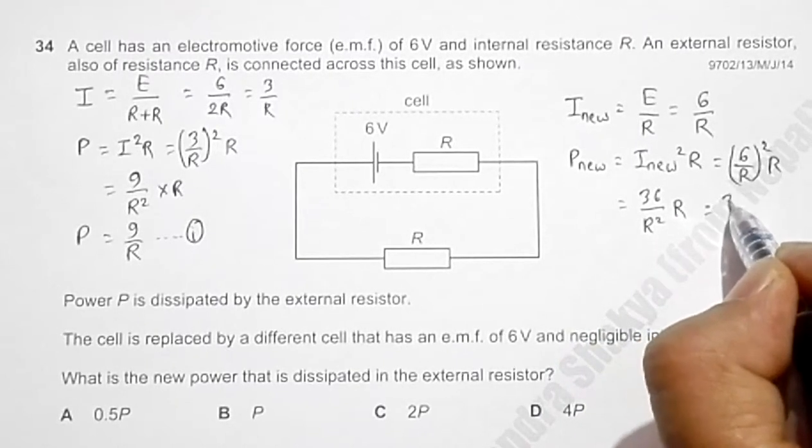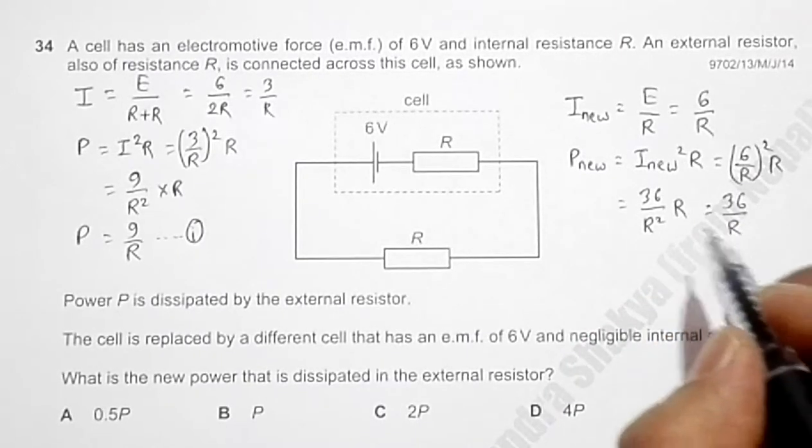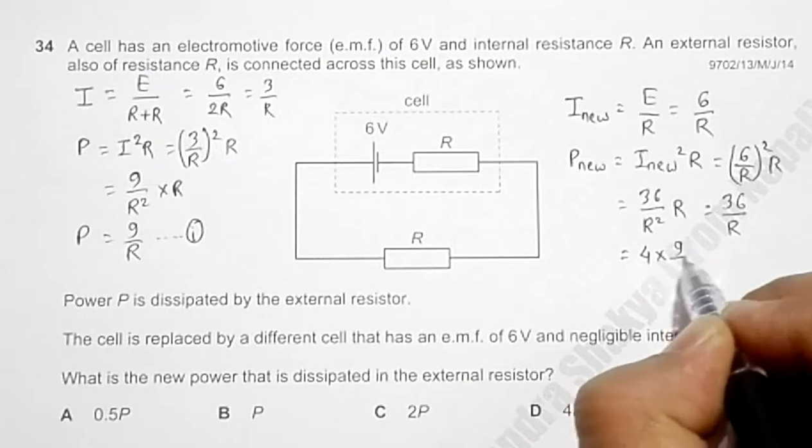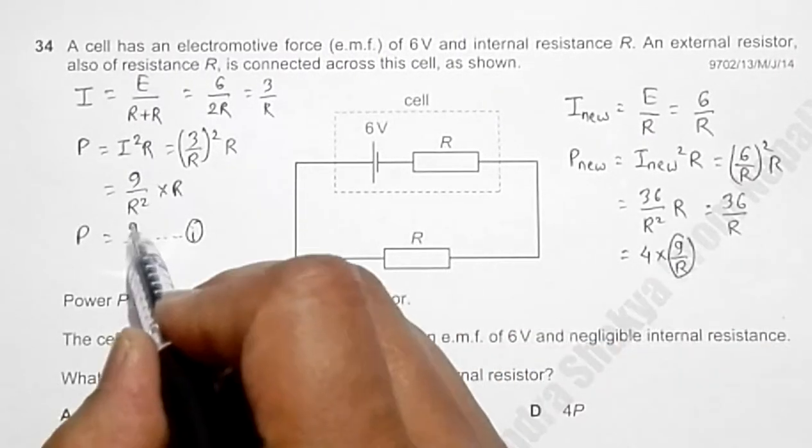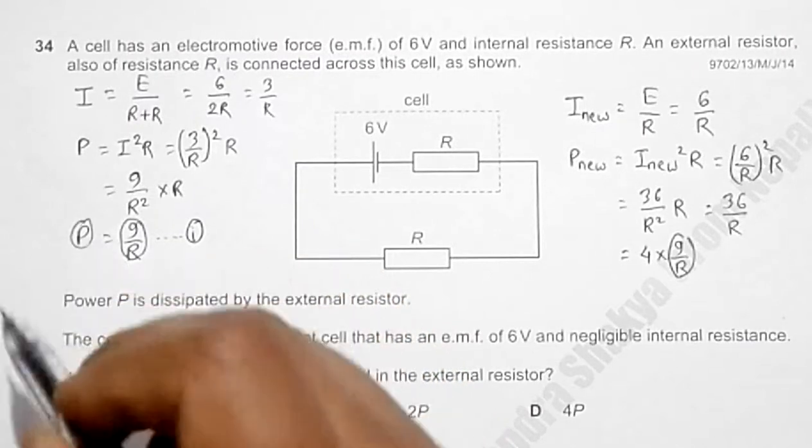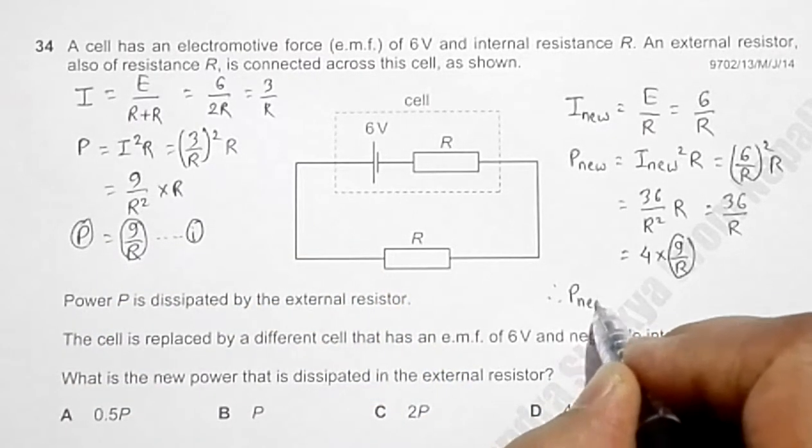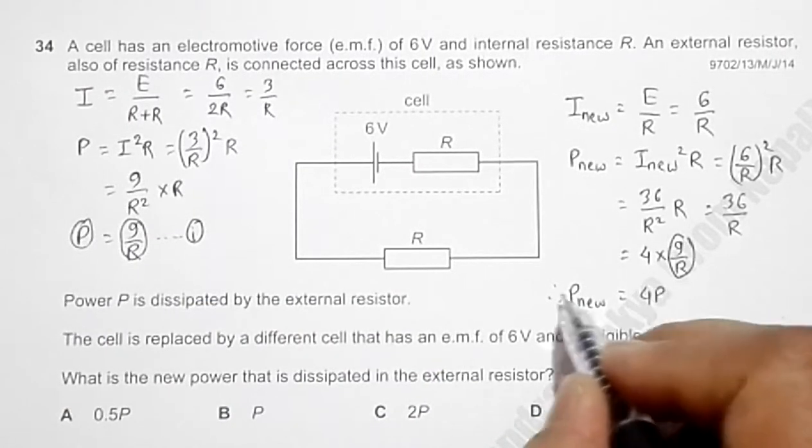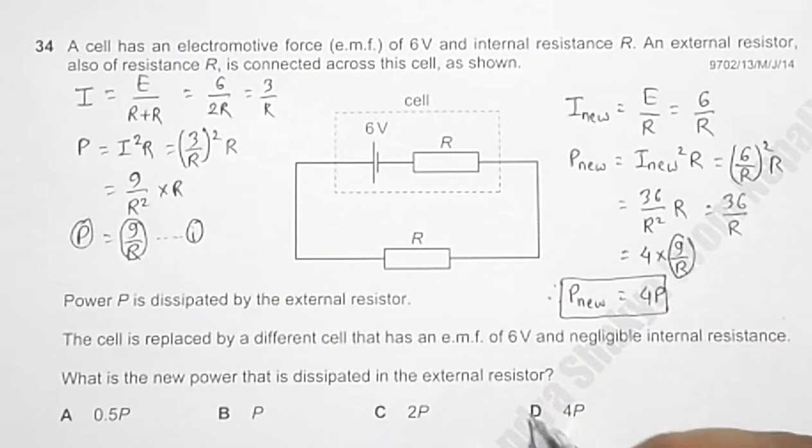So now I can change this to 4 into 9 by R. Now this 9 by R is the initial power P, so therefore power new will be equal to 4 into the previous power. So power equals 4 into P, which goes well with your choice number D here.